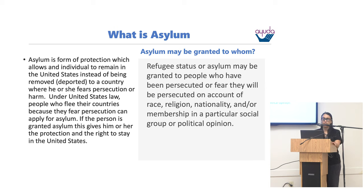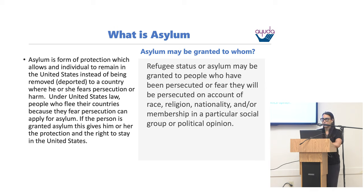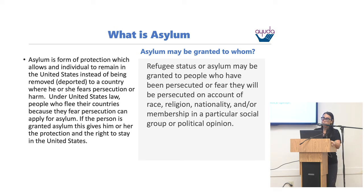What is asylum? Asylum is a form of protection that allows an individual to remain in the United States instead of being removed or deported to a country where he or she fears persecution or harm. Under United States law, people who flee their home country because they fear persecution can apply for asylum. If granted, asylum gives the person the protection and the right to stay in the United States. Asylum may be granted to people who have been persecuted or fear persecution on account of their race, religion, nationality, membership of a particular social group, or political opinion.